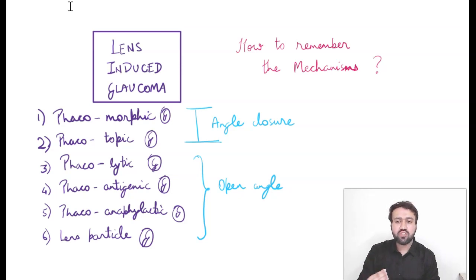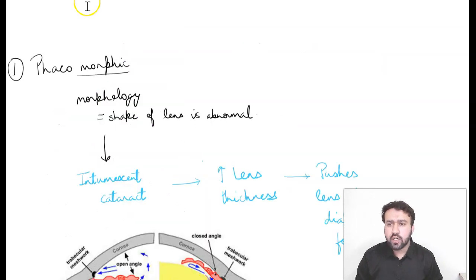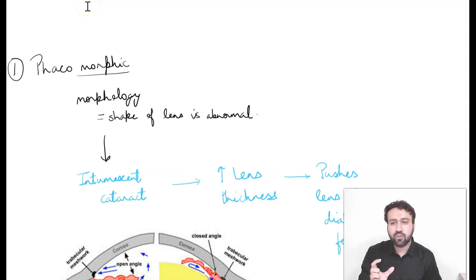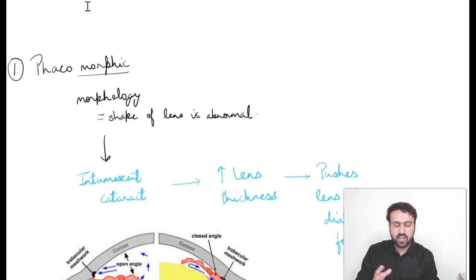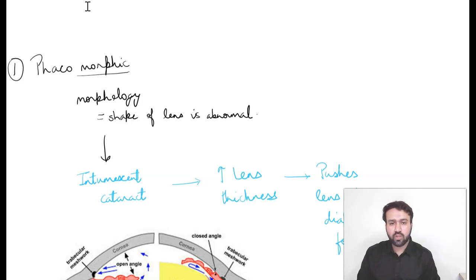Let's look at each of these terms and I'll explain the mechanism side by side. First, phacomorphic glaucoma. The word 'morphic' stands for morphology, which means shape. So in this case the shape of the lens is abnormal — something like an intumescent cataract where there is thickening of the lens. An increase in the thickness of the lens is going to cause phacomorphic glaucoma.